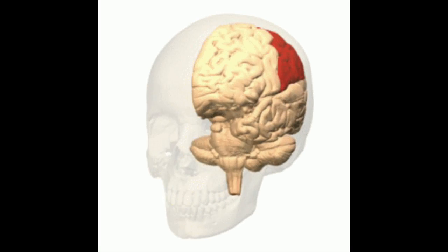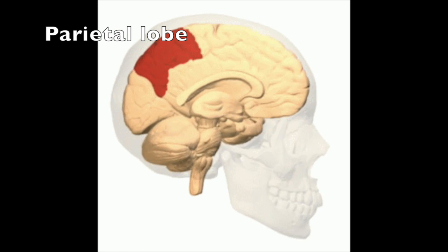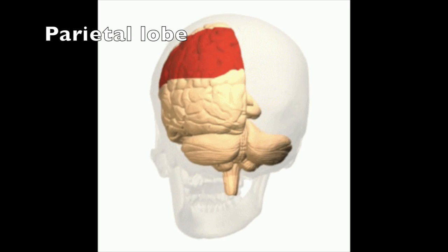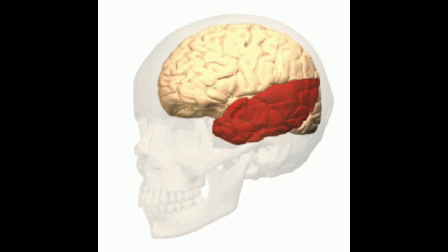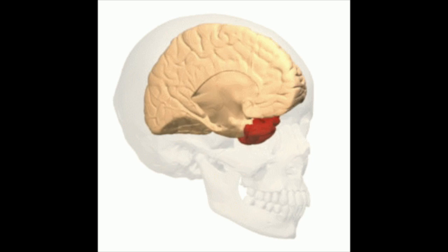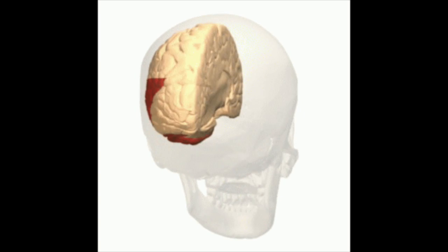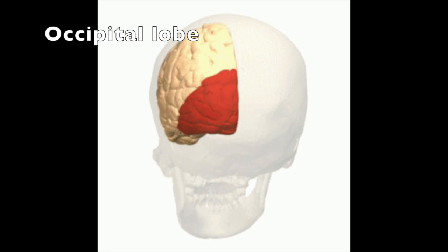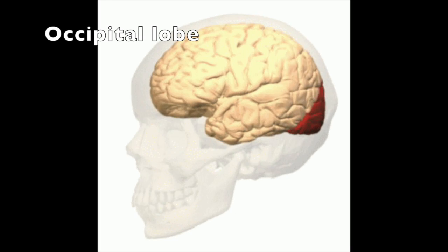Posterior to the central sulcus is the parietal lobe. The parietal lobe has sensory areas that provide somatosensory input, or sensory input from the skin, and it's also important for processing language. The lobes important for hearing are the temporal lobes, which also contain association areas that interpret sensory experiences and remember visual scenes and music. The lobe responsible for vision is the occipital lobe, which also has association areas that integrate visual input with other types of sensory input.